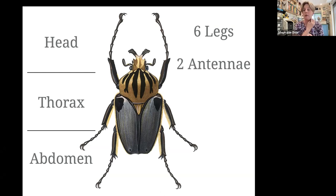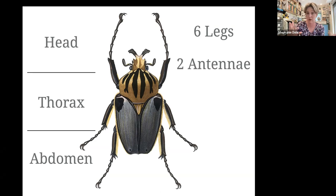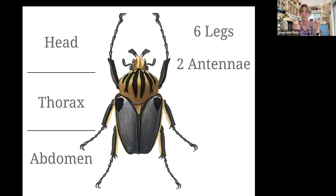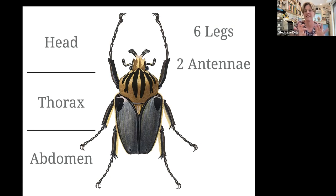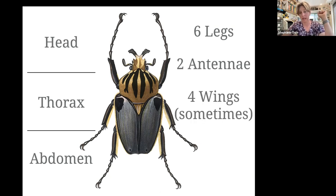The antennae have chemoreceptors — essentially taste and smell — thermoreceptors to sense heat and cold, hygroreceptors to sense moisture, and tactile receptors. Think of antennae as being like your fingertips, tongue, and nose all combined to tell you about the world if you're an insect. Insects also have four wings. There are a few very primitive groups like silverfish that never evolved wings, but for true insects they all have wings unless they've secondarily lost them.